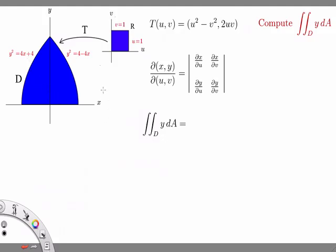So the change of variables that we're going to use is this map T, which in coordinates we have T of uv equals u squared minus v squared and 2uv. This means that x is equal to u squared minus v squared and y is 2 times u times v.